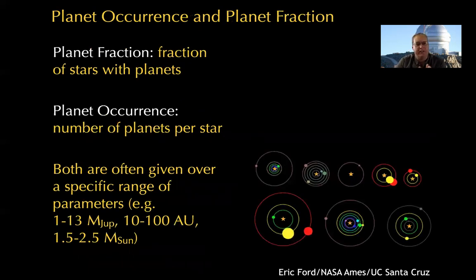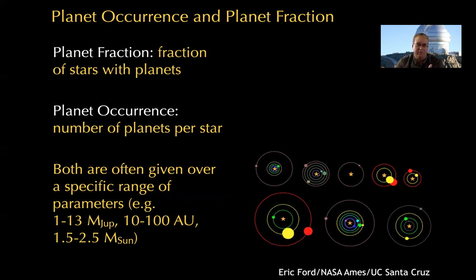A few more definitions of terms. There are two somewhat related quantities with a subtle but important difference: planet fraction versus planet occurrence. Planet fraction is just the fraction of stars with planets — if half of all stars have a planet, the planet fraction is one half, running from 0% to 100%. Planet occurrence, on the other hand, is the number of planets per star, and this can go above 100%. If every single star has eight planets, the planet occurrence is 800%. It's a slightly different idea depending on how many multi-planet systems you have.